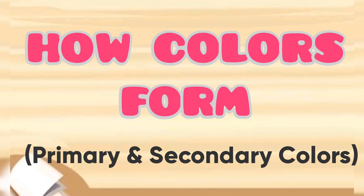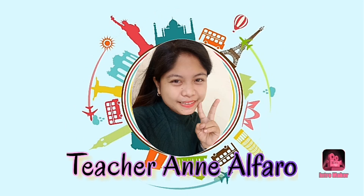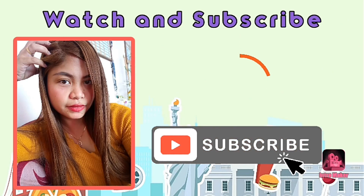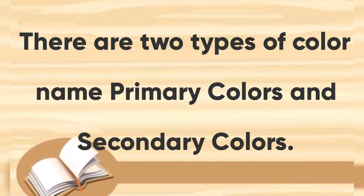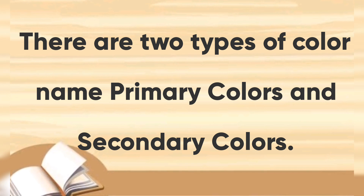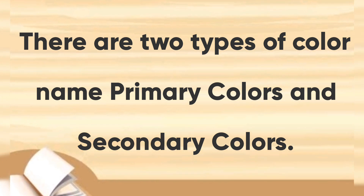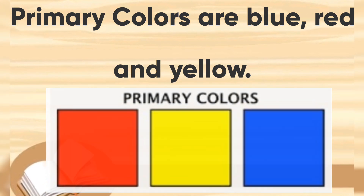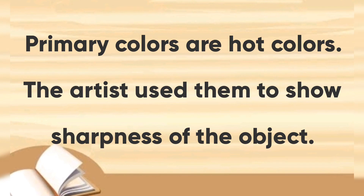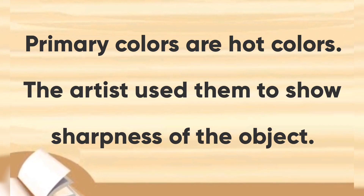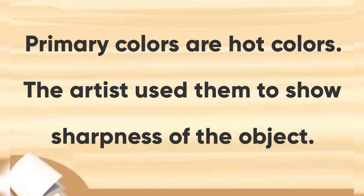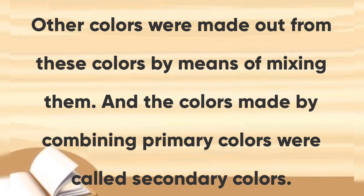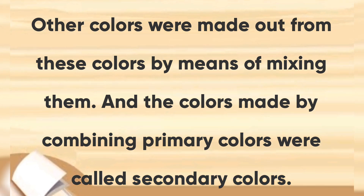Do you know, class, that there are two types of colors — namely primary colors and secondary colors? Primary colors are blue, red, and yellow. Take note, kids: primary colors are hot or warm colors. Artists use them to show the sharpness of the objects they draw. Other colors are made out from these colors by means of mixing them.